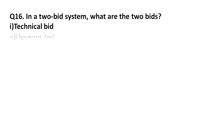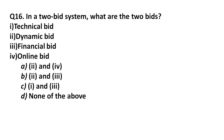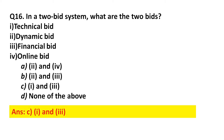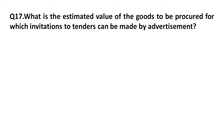Question 16: In a two-bid system, what are the two bids? Technical bid and financial bid. Option A: Two and four only. Option B: Two entry. Option C: One entry. Option D: None of the above. Answer: Option C, one entry — technical bid and financial bid.